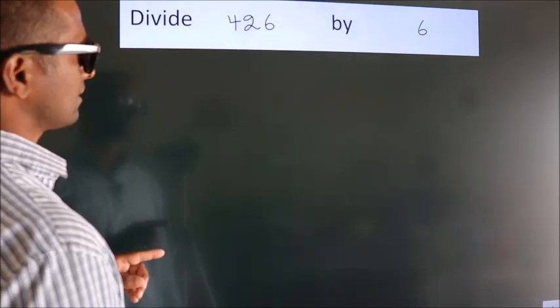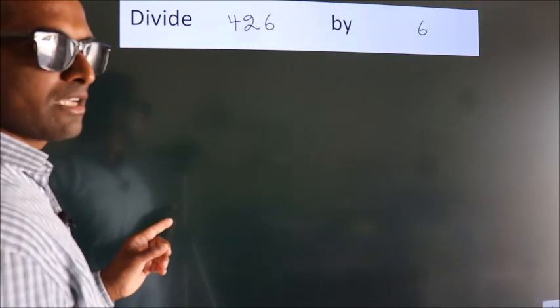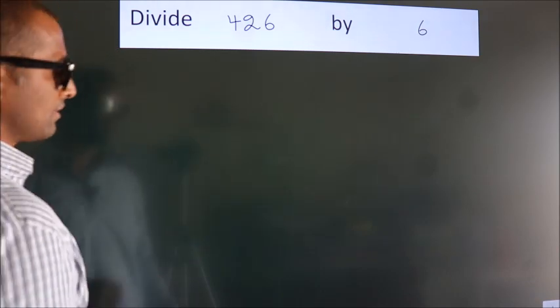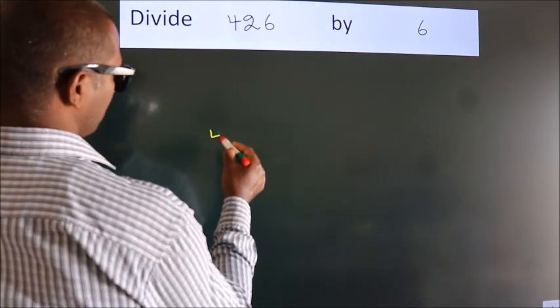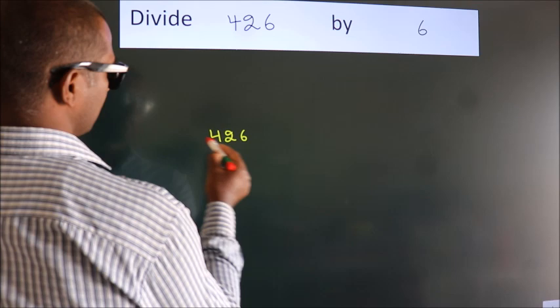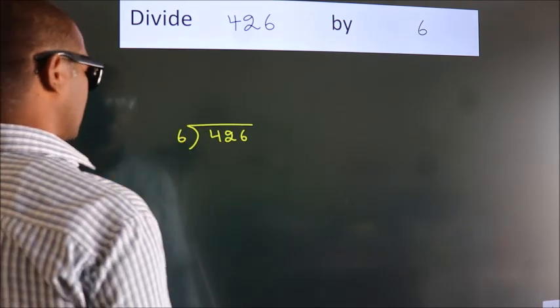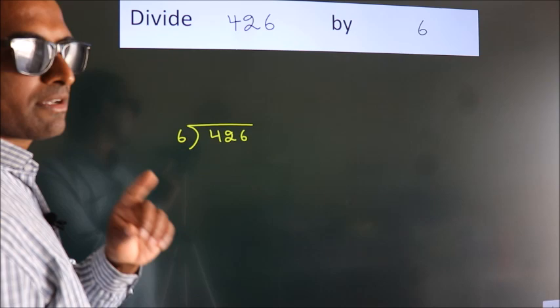Divide 426 by 6. To do this division we should frame it in this way. 426 here, 6 here. This is your step 1.